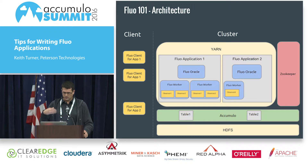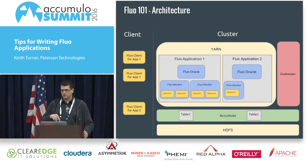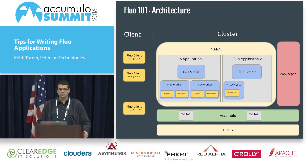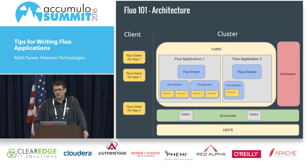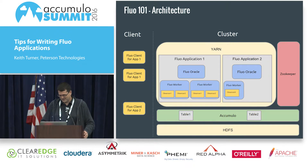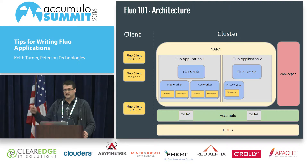Each Fluo application has an associated Accumulo table. Fluo clients write new data into that table, triggering observers to make changes. Fluo supports running worker processes — which run the user-provided observers — in YARN. Fluo also has something called an oracle, also running in YARN, which is a process that gives out ever-increasing timestamps and is used for transaction coordination. As a user, you don't really need to know about it until Fluo breaks.